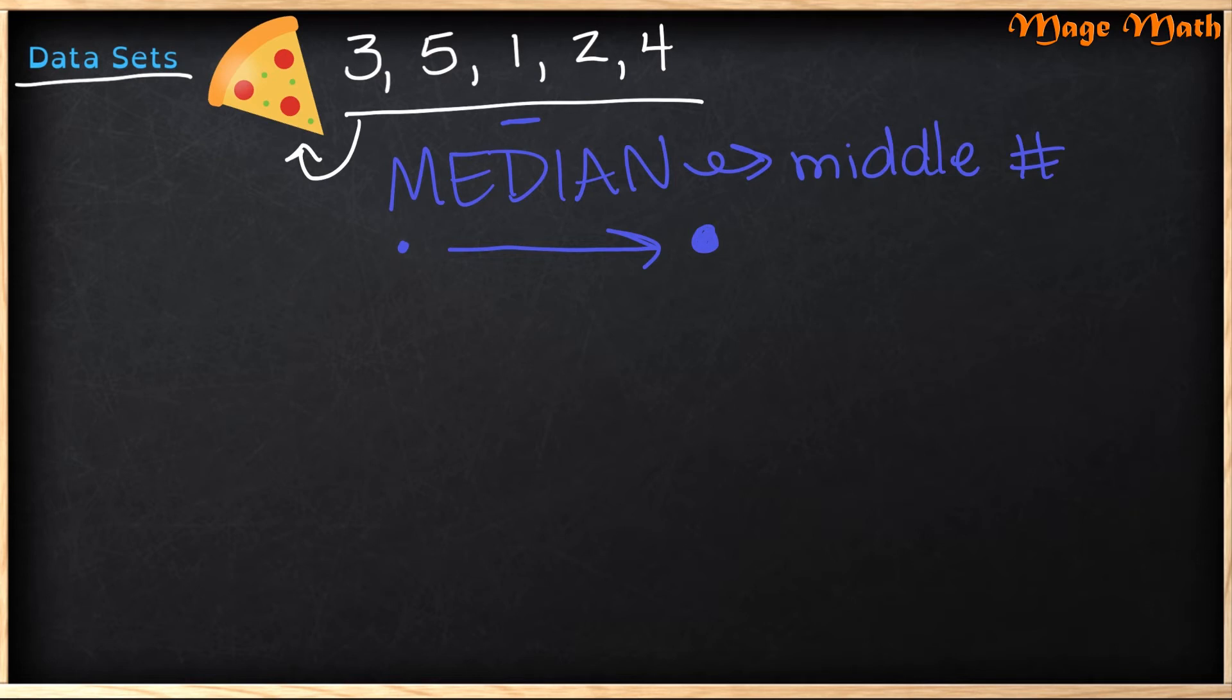If I reorder my numbers, I would get one, two, three, four, five. So my middle number would be three. That means my median equals three.